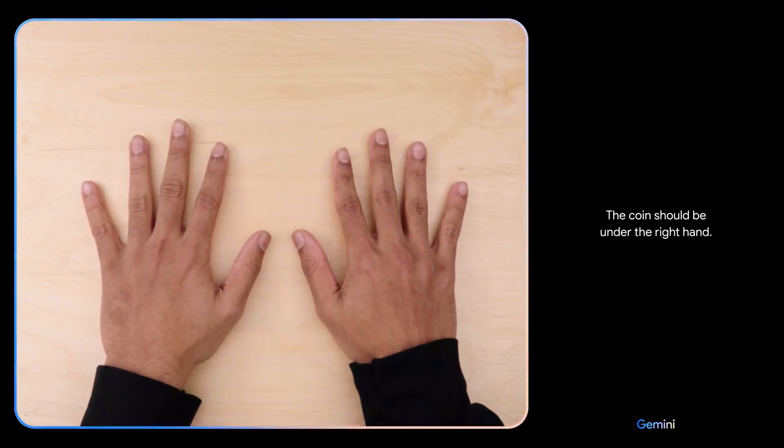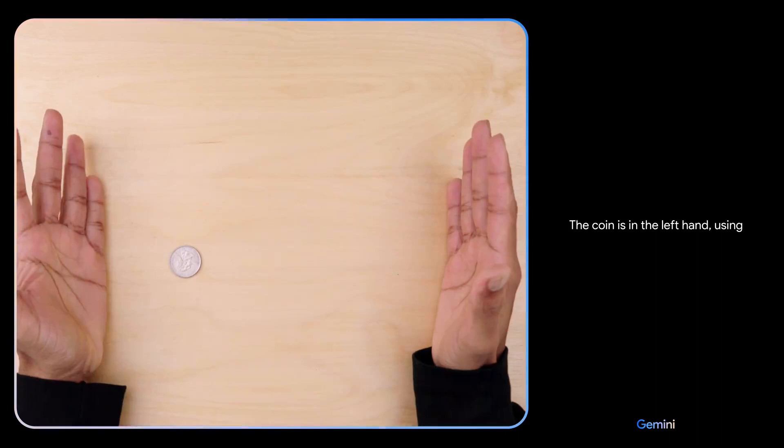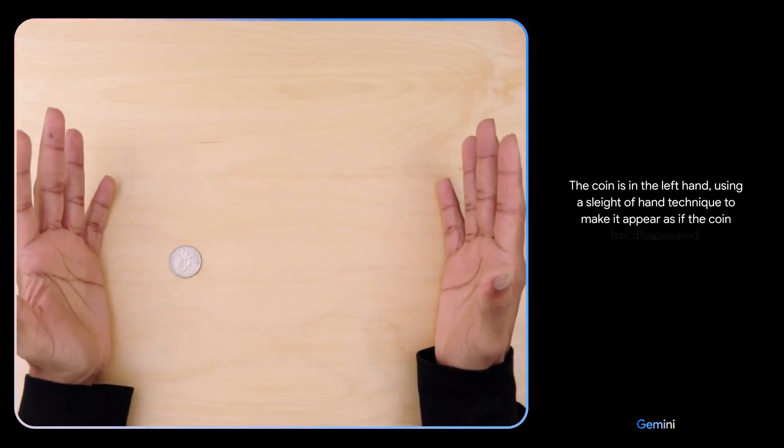The coin should be under the right hand. Hmm. I don't know. The coin is in the left hand using a sleight of hand technique to make it appear as if the coin has disappeared.